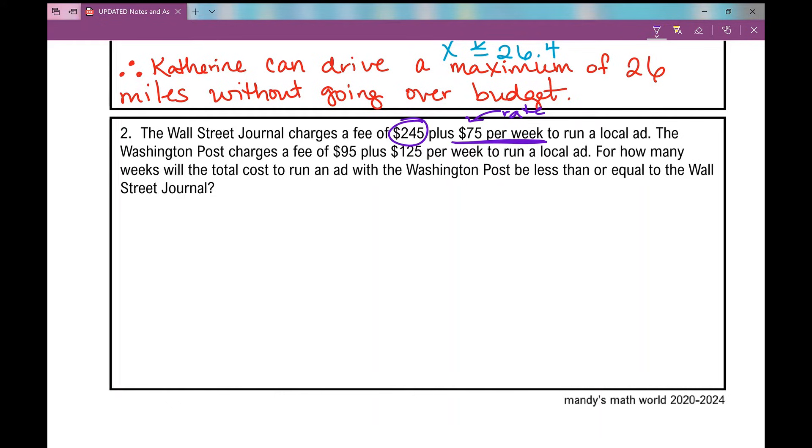Which means your variable is going to represent the number of weeks to run a local ad. The Washington Post charges a fee of $95 plus $125 per week to run a local ad. For how many weeks will the total cost to run an ad with Washington Post be less than or equal to the Wall Street Journal?